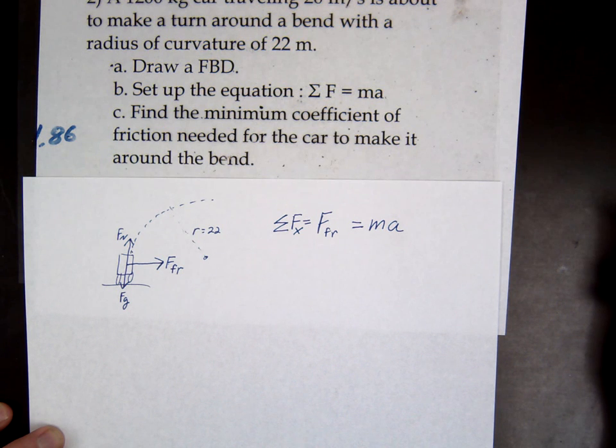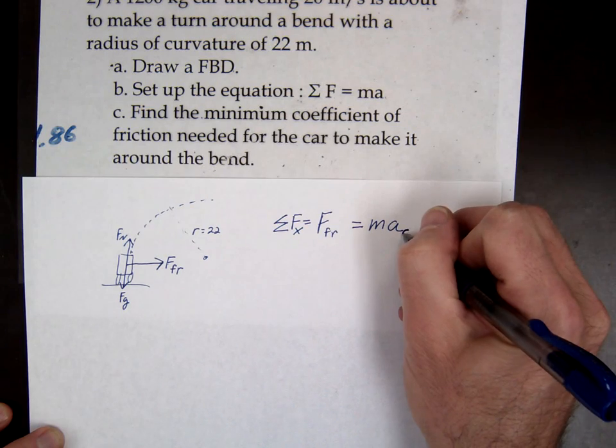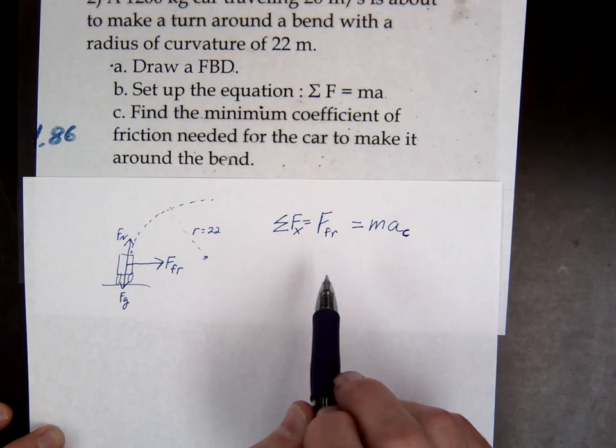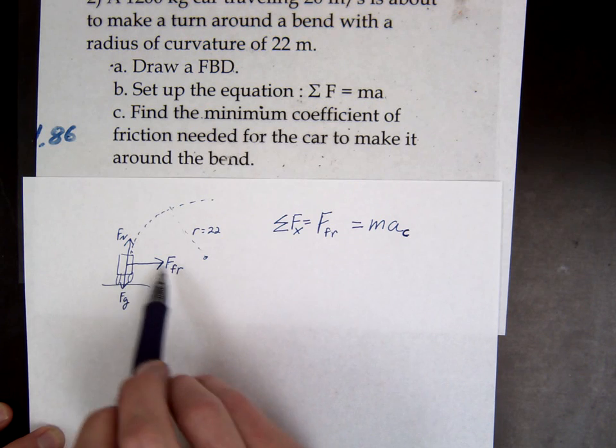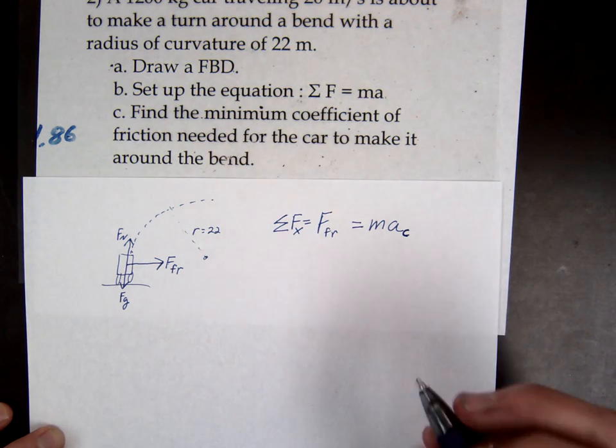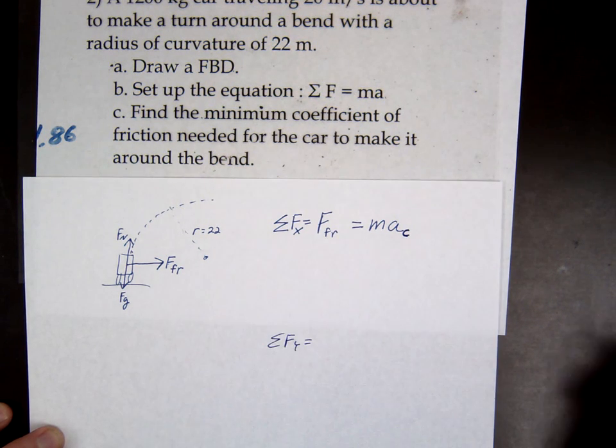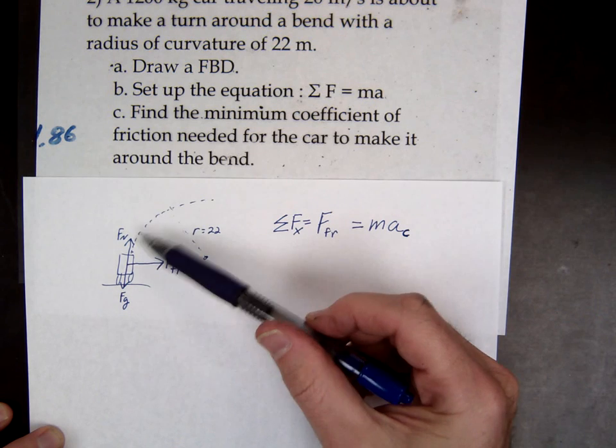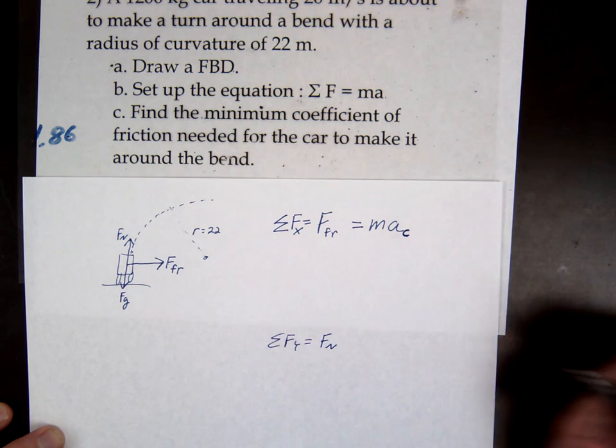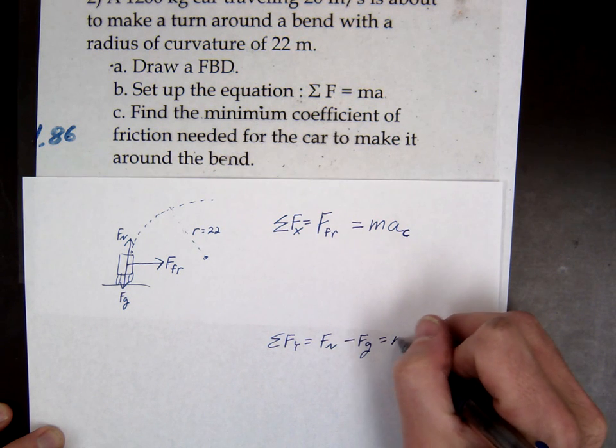This is centripetal a, this is the acceleration that keeps us in the circle, so that's always towards the center. We can write it as mac. In our y equation we only have two: f normal going up, gravity going down. That equals ma.